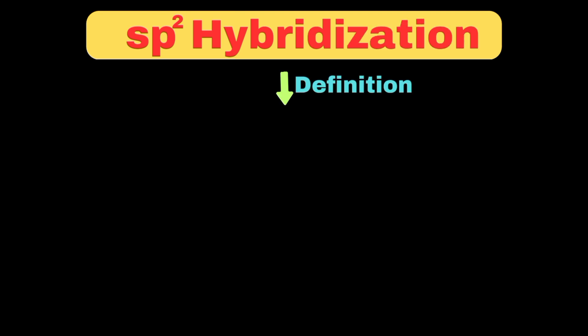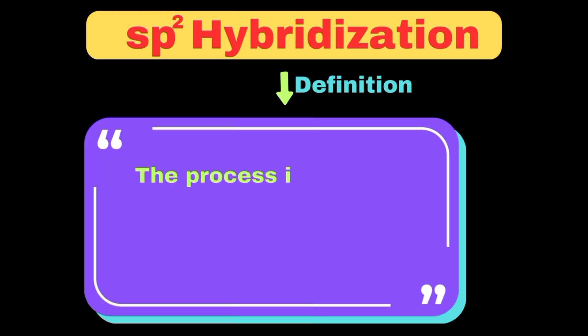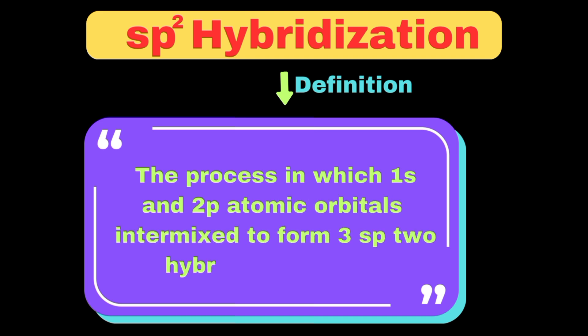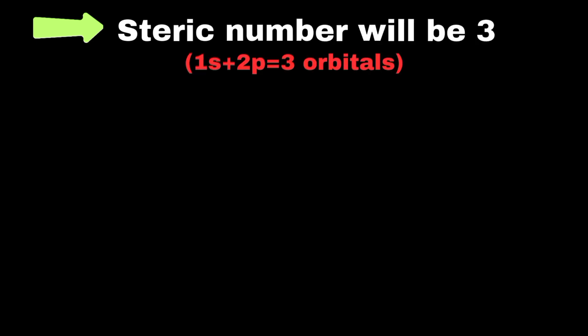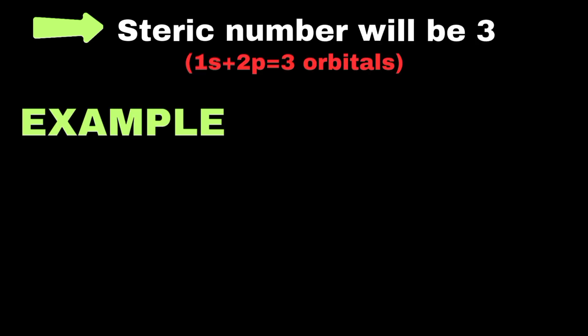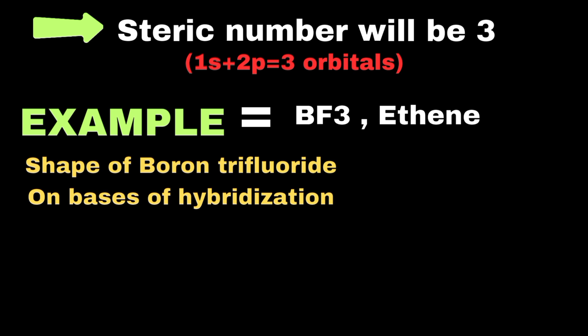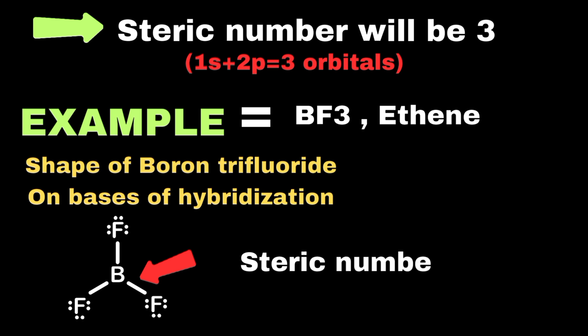Now let's move towards sp2 hybridization. sp2 hybridization is the process in which 1s and 2p atomic orbitals intermix to form three sp2 hybridized orbitals. The steric number will be three because 1s and 2p orbitals are involved in mixing. Common examples of sp2 hybridization are boron trifluoride and the ethene molecule. Since boron makes three single bonds with fluorine, its steric number is three, confirming sp2 hybridization of boron in BF3.